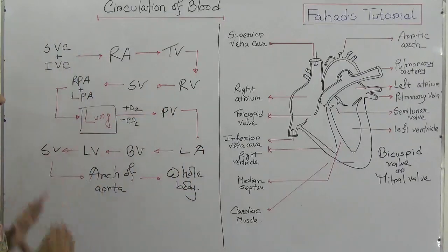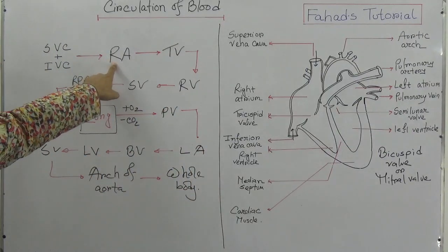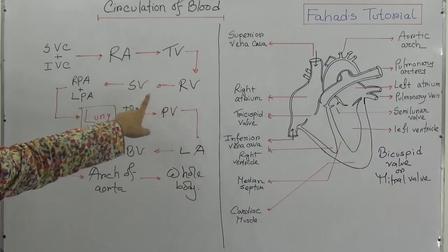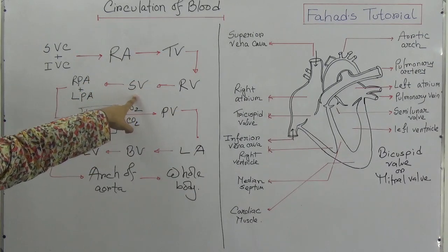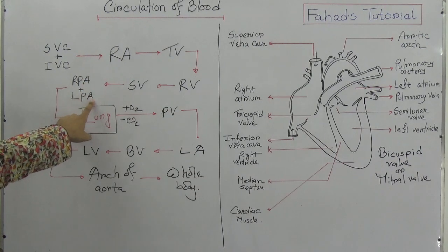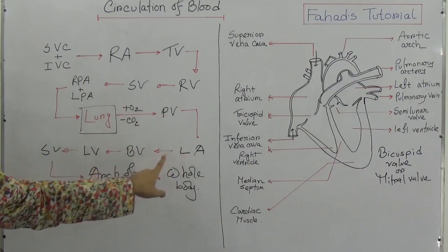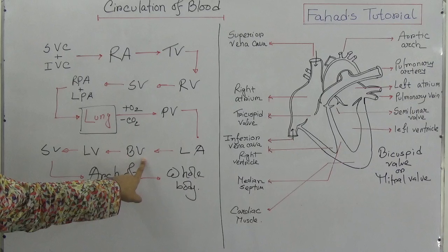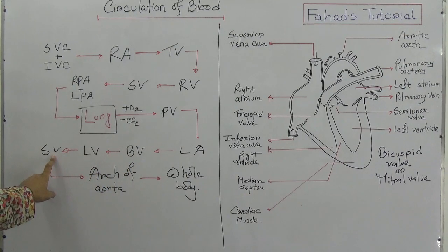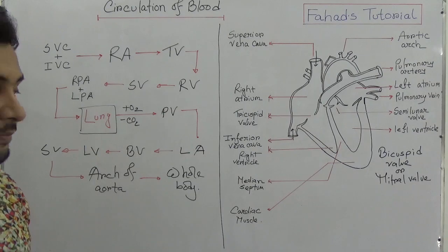To summarize the pathway: right atrium → tricuspid valve → right ventricle → semilunar valve → right pulmonary artery + left pulmonary artery → lungs → pulmonary vein → left atrium → bicuspid valve → left ventricle → semilunar valve → arch of aorta → whole body.